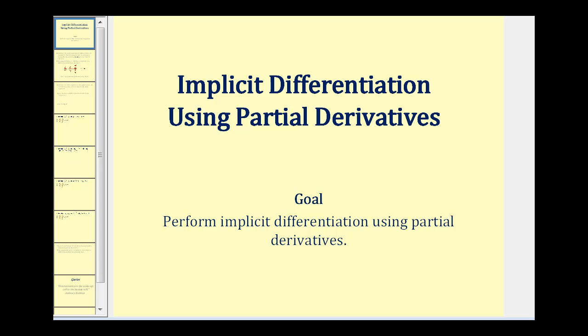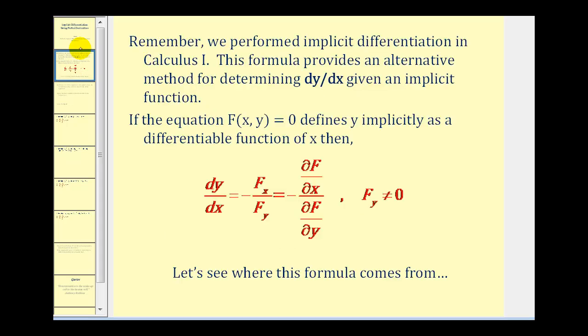Welcome to Implicit Differentiation Using Partial Derivatives. Remember, we performed implicit differentiation in calculus one. The formula below provides an alternative method for determining dy/dx given an implicit function. If an equation f(x, y) = 0 defines y implicitly as a differentiable function of x, then dy/dx equals the opposite of the partial derivative of f with respect to x divided by the partial derivative of f with respect to y, as long as f_y does not equal zero.